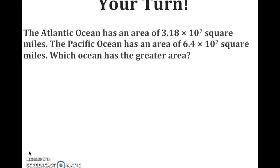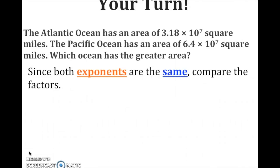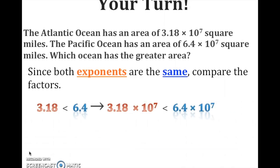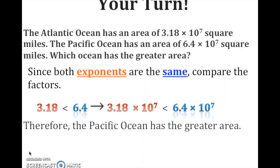It's your turn. The Atlantic Ocean has an area of 3.18 times 10 to the 7th square miles. The Pacific Ocean has an area of 6.4 times 10 to the 7th square miles. Which ocean has the greater area? Pause the video and give it a try. The exponents are the same, so compare the decimals. Think of money: $3.18 versus $6.40. Since 6.4 is greater, the Pacific Ocean, 6.4 times 10 to the 7th, has the greater area.